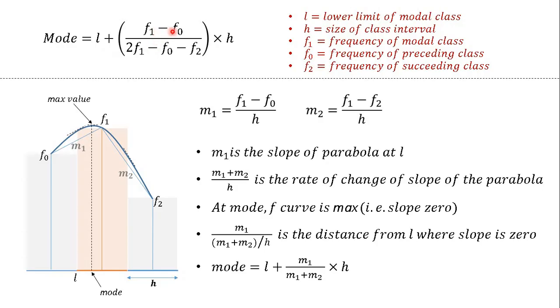Here f1 minus f0 represents the slope M1, which is the change of slope as we move from L to mode and this denominator with h represents the rate of change of slope, which is M1 plus M2 divided by h.